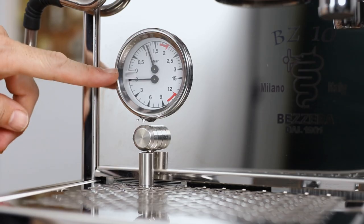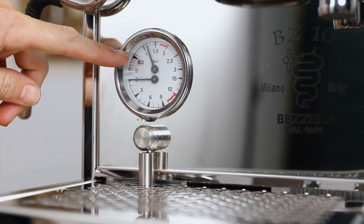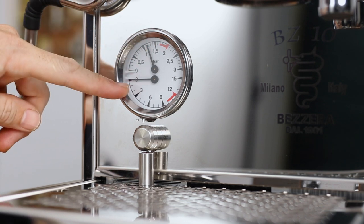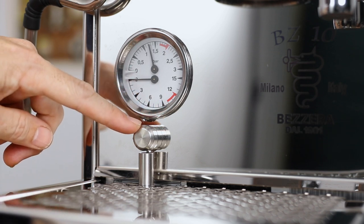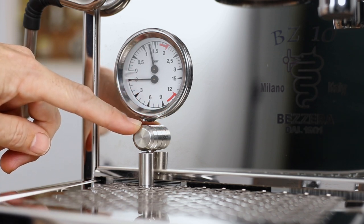And to cover off those last little details of the BZ10 before we start brewing, you have a dual manometer gauge with that top half being your boiler pressure and the bottom half being your pump or your brewing pressure.